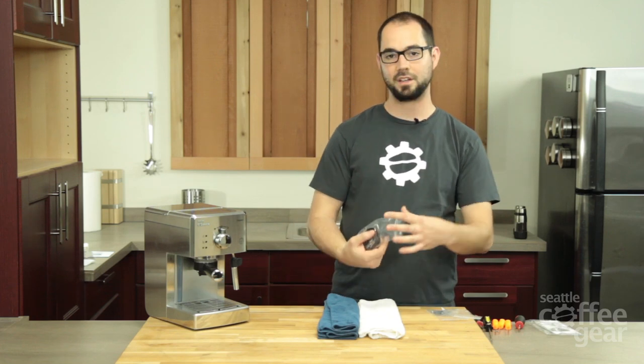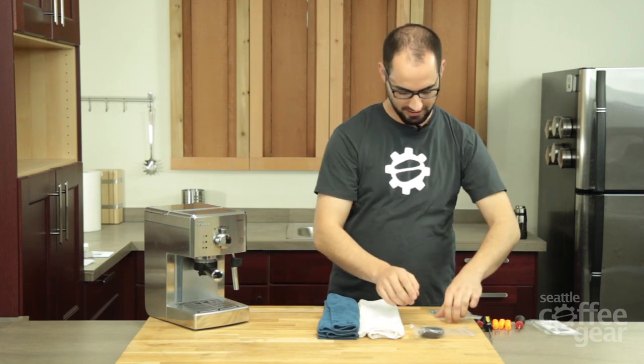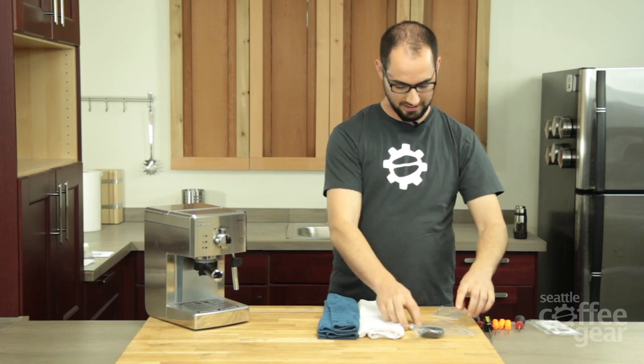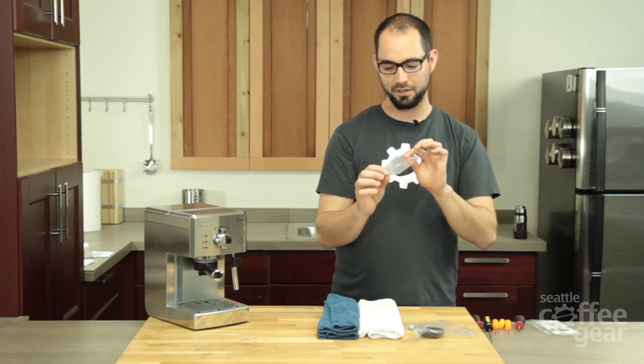This comes with five parts. It comes with your brew head gasket, the screen and screw, and your boiler spring and boiler valve.